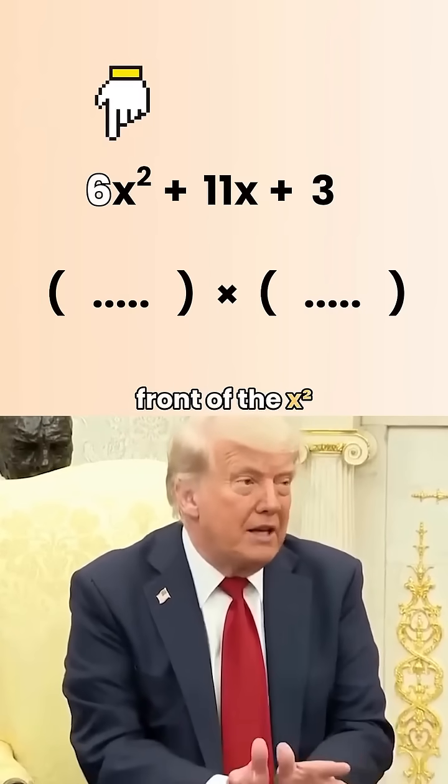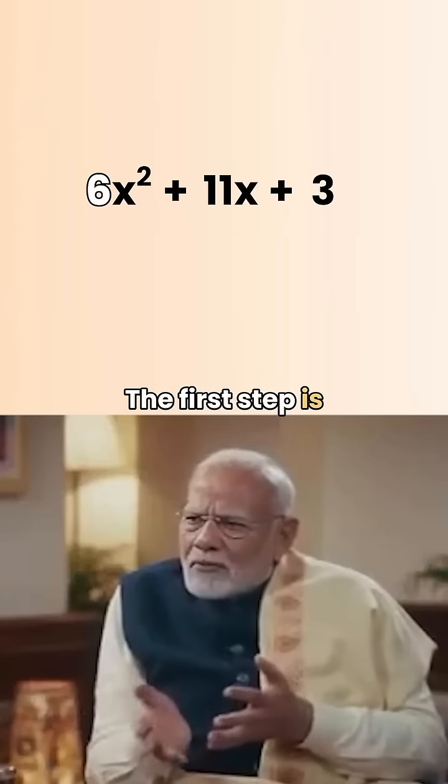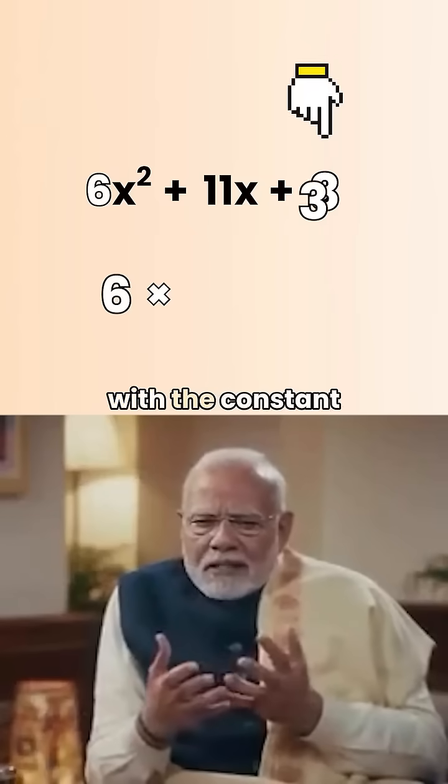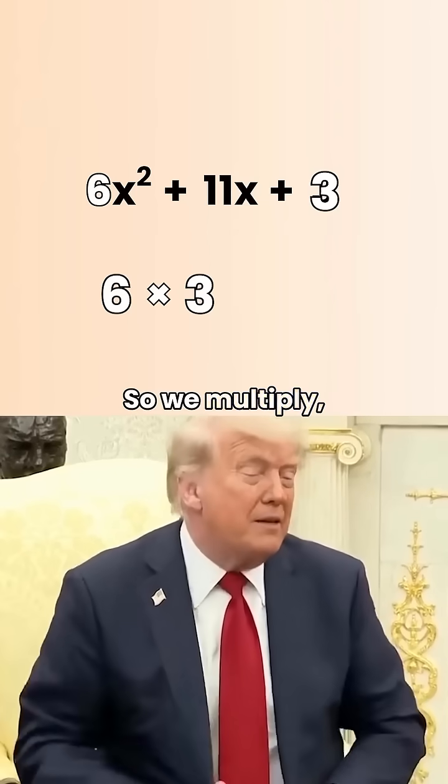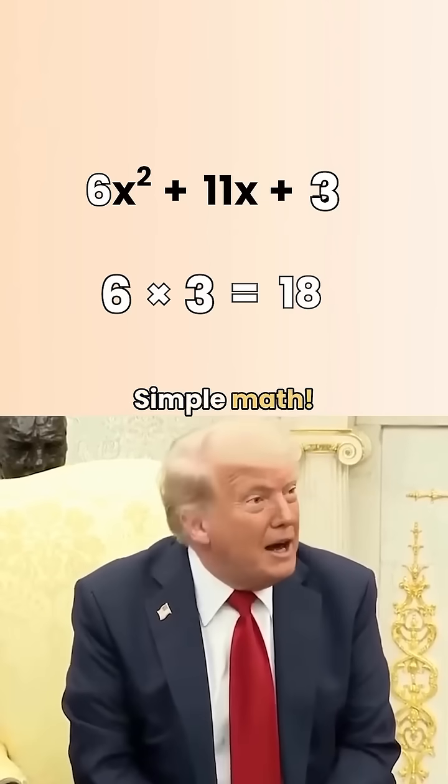There's a number in front of the x squared. Indeed. The first step is to multiply that number with the constant term at the end. Let us calculate that. Right. So we multiply. That gives us 18. Simple math. I like it.